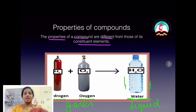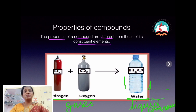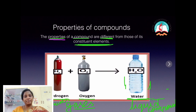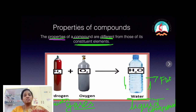One more difference: water helps in switching off fire — water can be used as a fire extinguisher. But one of the constituent elements that makes water, oxygen, is a good supporter of burning. This illustrates the difference between the compound and its constituent elements — the properties of a compound are different from those of its constituent elements.